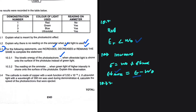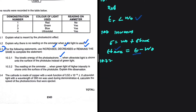For 10.3.2: the reading on the ammeter when green light of higher intensity is shone on the surface of the photo tube — the reading on the ammeter will increase. The ammeter reads current, and we know that current equals charge divided by time. If the time decreases, then the current increases.